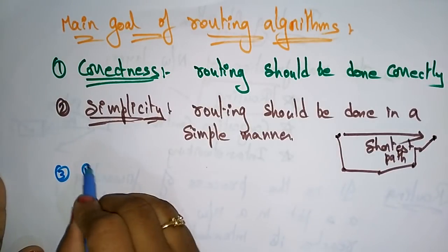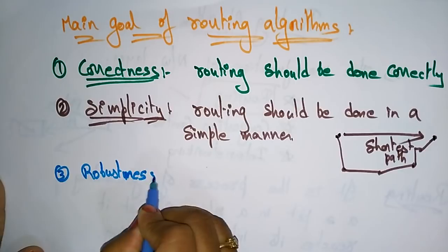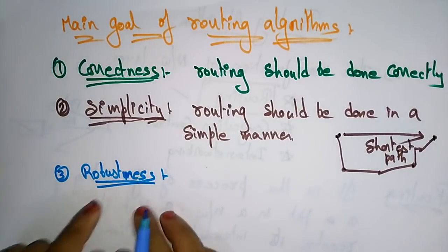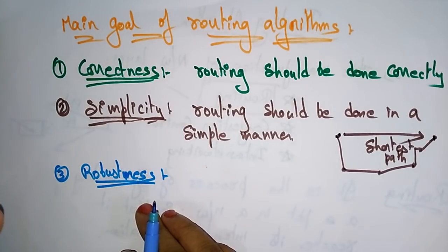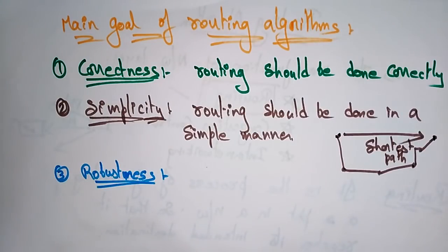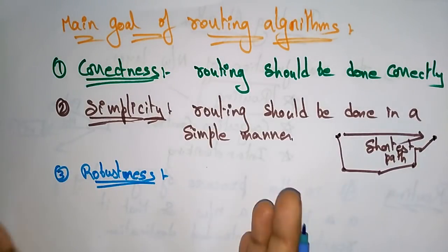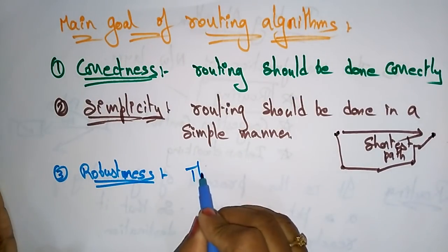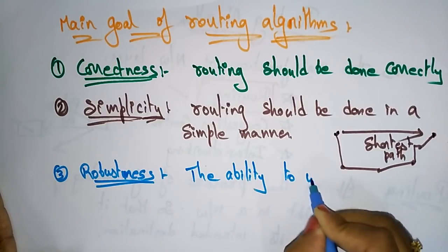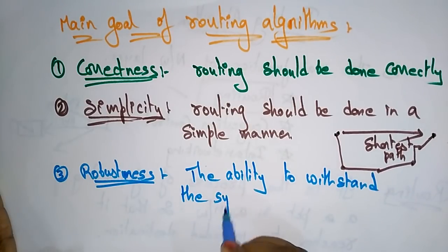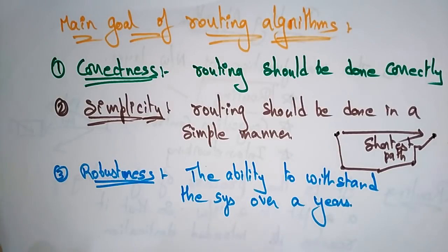The third goal is robustness. When designing a routing algorithm, you must consider its ability to withstand the system over the years. The algorithm should be designed so that extra qualities can be added in the future. The conditions and quality should remain strong even when changes are made to the system.